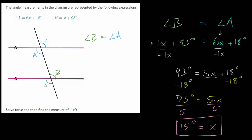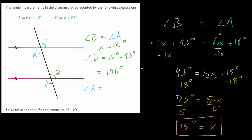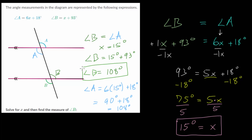Now we need to find the measure of angle B. Let's check our work by plugging in x equals 15 degrees. Angle B is 15 degrees plus 93 degrees, which equals 108 degrees. To check, we'll also find angle A: 6 multiplied by 15 degrees plus 18 degrees equals 90 degrees plus 18 degrees, which is also 108 degrees. Our answer makes sense, so we can feel confident that angle B is 108 degrees.